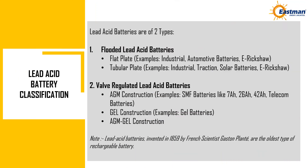Lead acid battery classification. Lead acid batteries are of two types. The first type is flooded lead acid batteries, which include flat plate and tubular plate designs. Flat plate examples include industrial, automotive batteries, and e-rickshaw. Tubular plate examples include industrial, traction, solar batteries, and e-rickshaw. The second type is valve-regulated lead acid batteries.